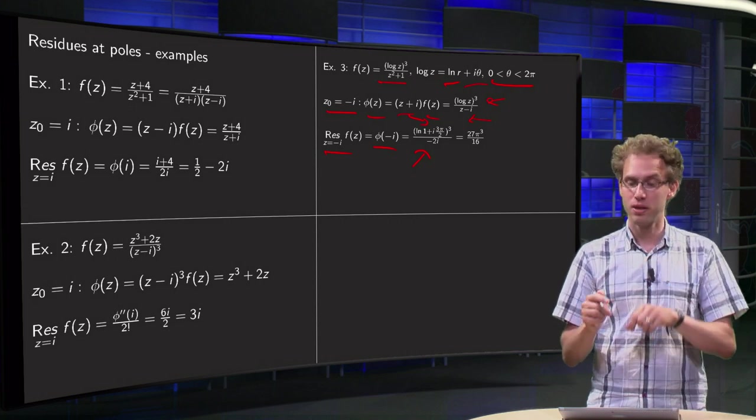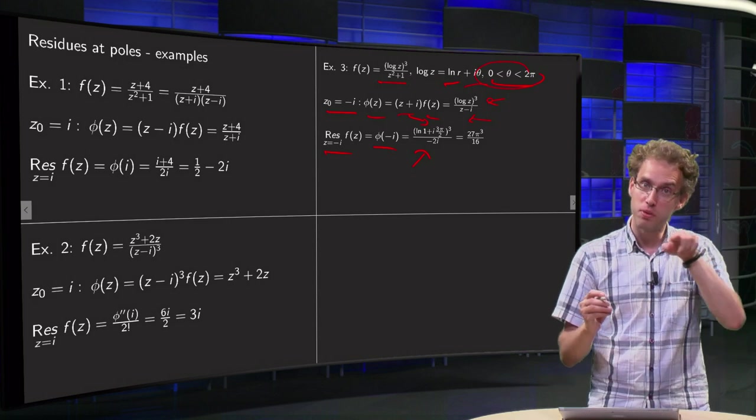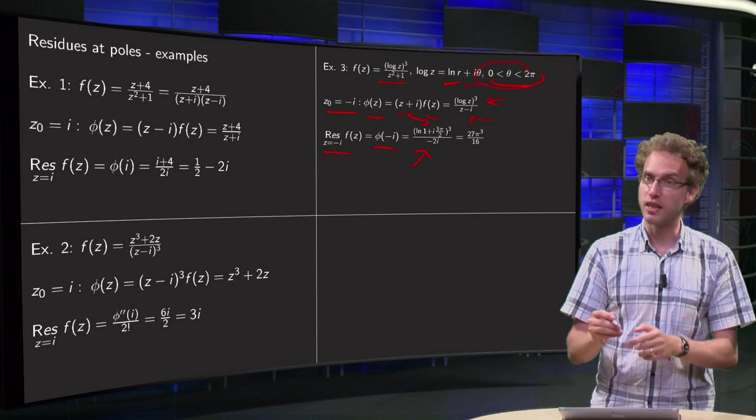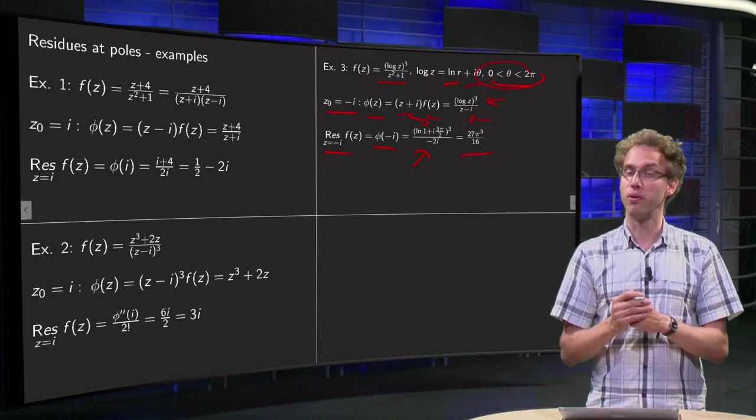We are at minus i. Notice our argument has to be between 0 and 2pi. Our argument will be 3pi over 2. We get i times 3pi over 2 cubed. Which simplifies to the following expression.